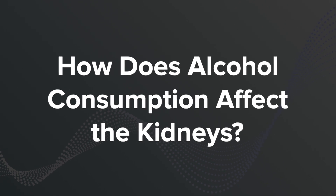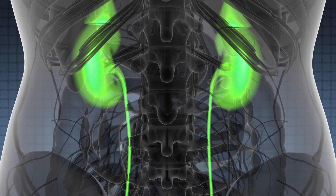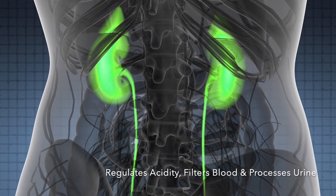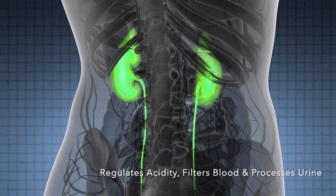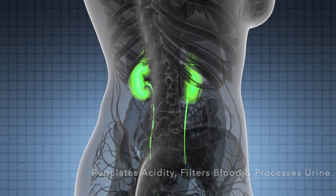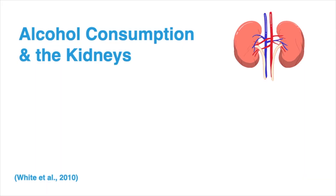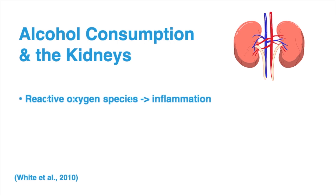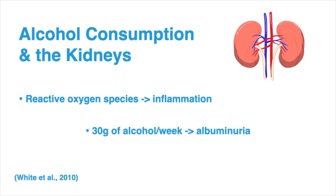How does alcohol consumption affect the kidneys? The kidneys are responsible for many functions including regulating the acidity of the blood, filtering the blood, and processing urine. Research shows that alcohol consumption can cause oxidative stress by producing excess amounts of reactive oxygen species, which leads to the inflammation of the kidneys. A study conducted by White and colleagues discovered that the consumption of 30 grams, or just greater than one ounce of alcohol per week, for a total of five years or more can lead to albuminuria, which is a typical sign of kidney disease.